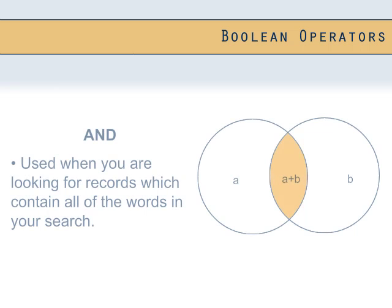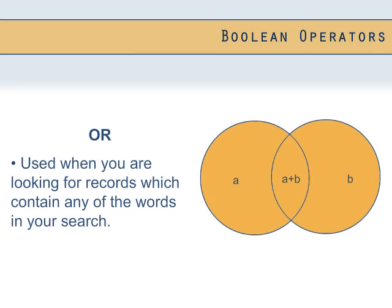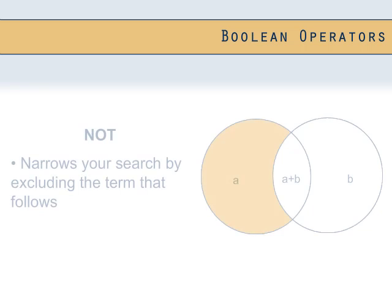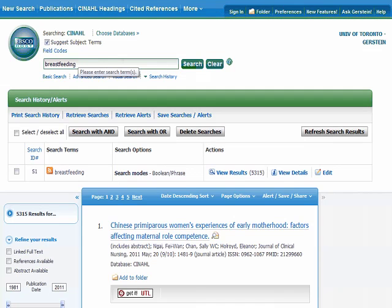To review what we learned about Boolean operators in our previous tutorial: the most common Boolean operators are AND, OR, and NOT. AND is used when you are looking for records that contain all of the words in your search. OR is used when you are looking for records containing any of the words. NOT narrows your search by excluding the term that comes after it. Because we want to retrieve articles that contain any of our terms, we are going to search with OR. Let's type breastfeeding or breast feeding, our two-word phrase, or lactation into the search box.